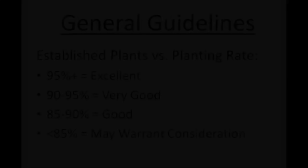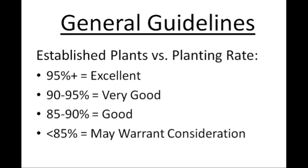Simply divide 28 by 32, and you'll get 0.875, or 87.5 percent of the seeds became established plants. For excellent stands, we typically see 95 percent or better of the seeds become established plants that will contribute to yield. For very good stands, we see 90 to 95 percent establishment. When stands fall below 85 percent of the corn seeding rate, additional investigation and actions may be warranted.